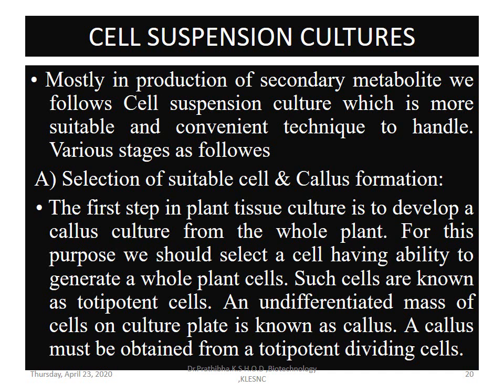The stages of cell suspension culture are as follows. First, selection of suitable cell and callus formation: the first step is to develop a callus culture from the whole plant. For this purpose, we select a cell having the ability to generate a whole plant — such cells are known as totipotent cells. Every cell, tissue, and organ in a plant system can exhibit totipotency characteristics. An undifferentiated mass of cells on a culture plate is known as callus, and a callus must be obtained from totipotent dividing cells.